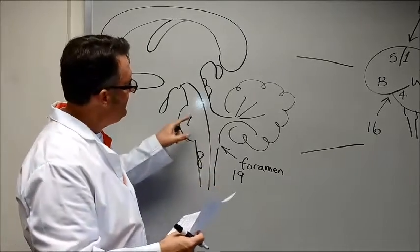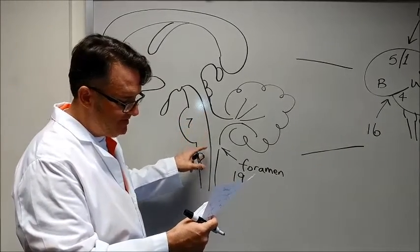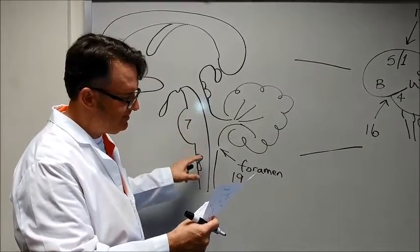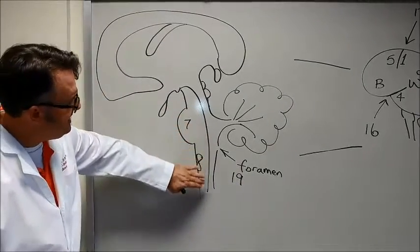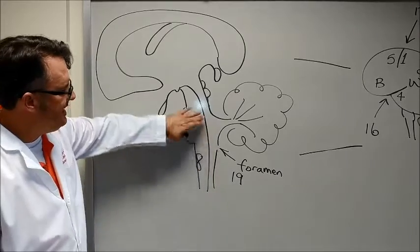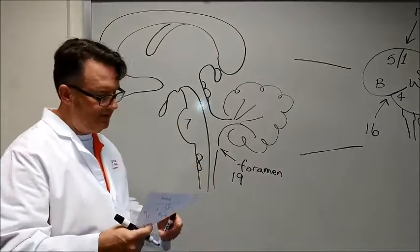At the very bottom of the page it says the reticular formation is important in sleep, arousal, involved in pain transmission, and mood. It kind of bridges this area between the pons and the medulla oblongata, the reticular formation.